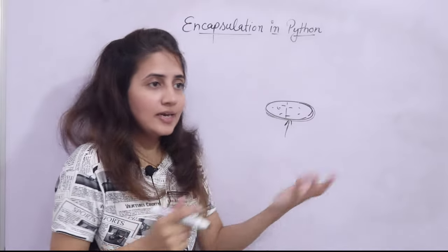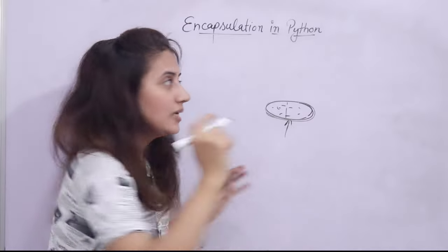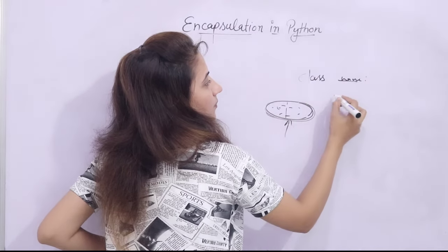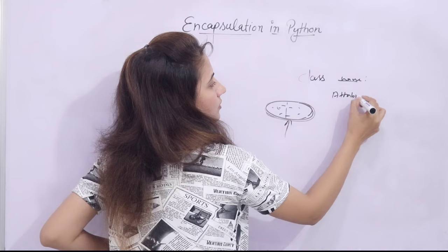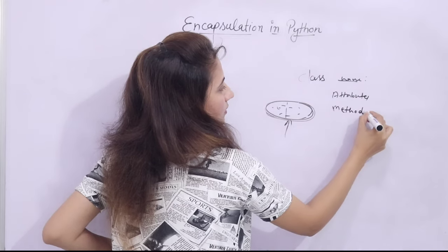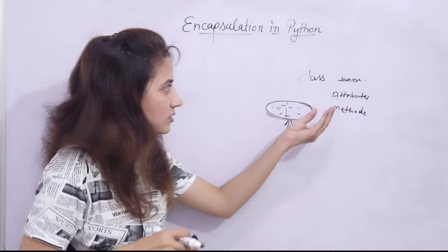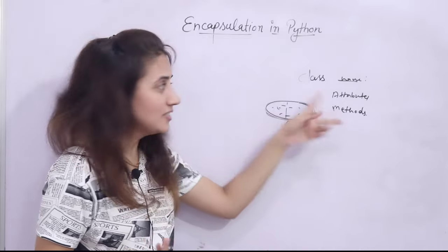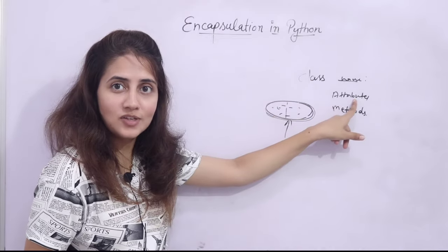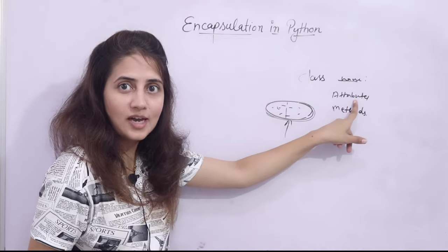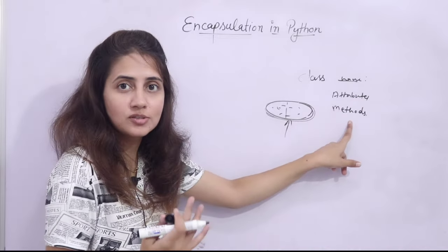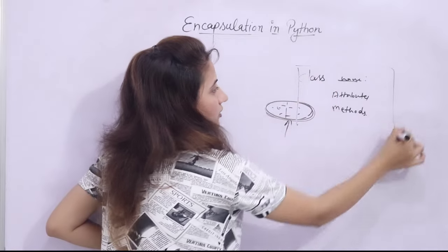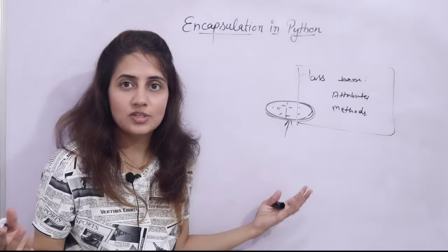If you are defining a class, what is there in a class? A class name, then some attributes and methods. This is the simplest example of encapsulation because in a class we have some attributes — the data of the class, the member data members — as well as the methods in a single unit. So this is a capsule — this is nothing but encapsulation.